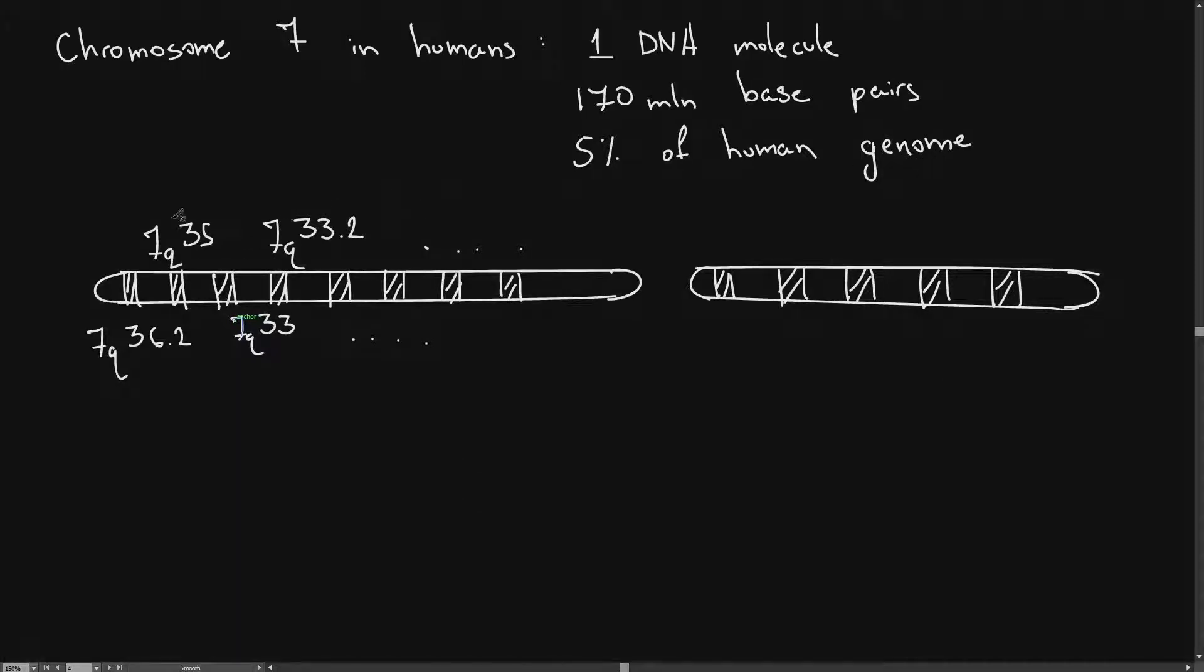Here you see the names of certain genes. For example, 7q36.2, 7q35, and so on. And it's important to remember that all of these are unique to chromosome 7, and that each of these positions where there is a gene is unique to that gene.